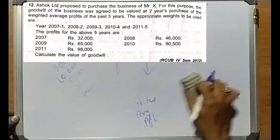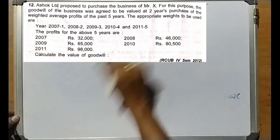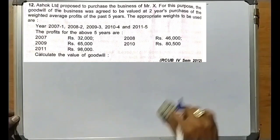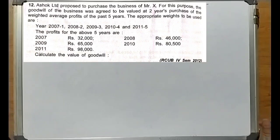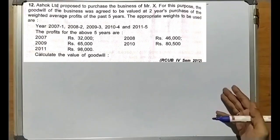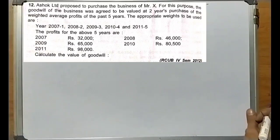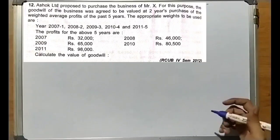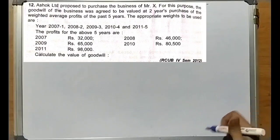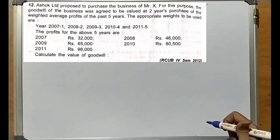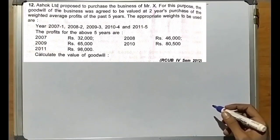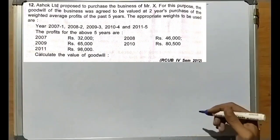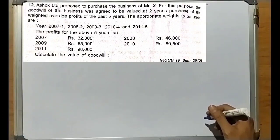Problem number 12: Ashok Limited proposed to purchase the business of Mr. X. For this purpose, the goodwill of the business was agreed to be valued at 2 years' purchase of the weighted average profits of the past 5 years. The number of years of purchase is 2. The appropriate weights to be used are: 2007 = 1, 2008 = 2, 2009 = 3, 2010 = 4, 2011 = 5. The weights are continuously increasing, with the most recent year 2011 having the highest weight of 5.